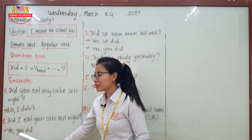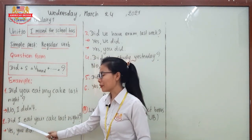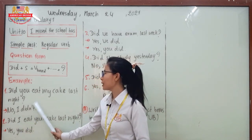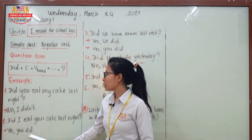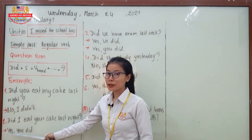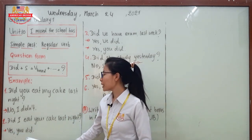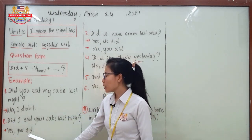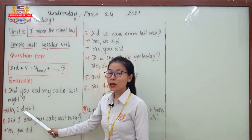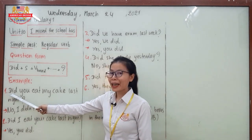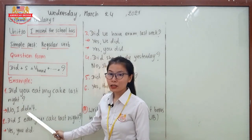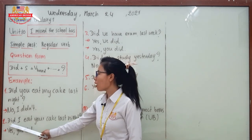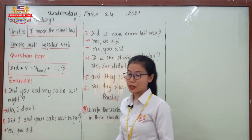For the answer, 'Yes, you did.' We say 'did' here because it is the affirmative form. One more important point: the question starts with 'did,' so the answer also uses 'did.' If the question starts with 'was/were,' the answer uses 'was/were.' If the question starts with 'can,' the answer uses 'can' or 'cannot.' The verb in the answer matches the verb at the beginning of the question.